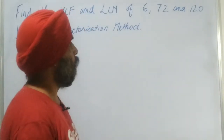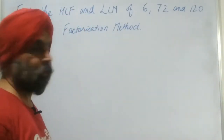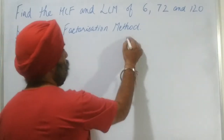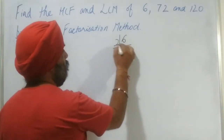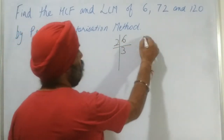So now we need to find the prime factors first. For 6, the factors are 2 and 3 only.